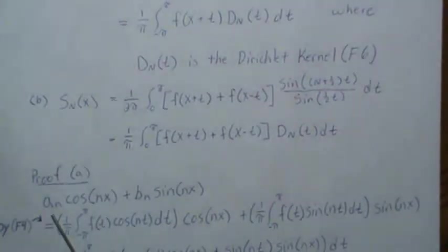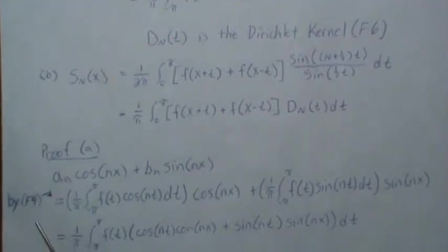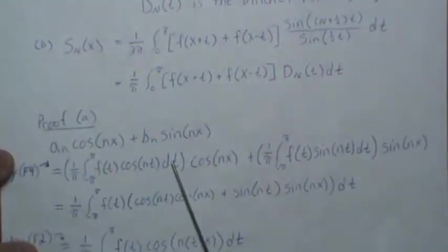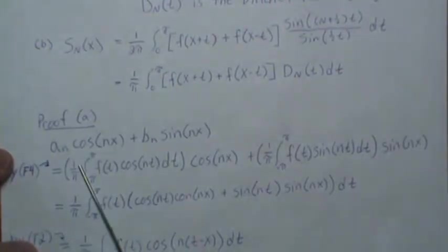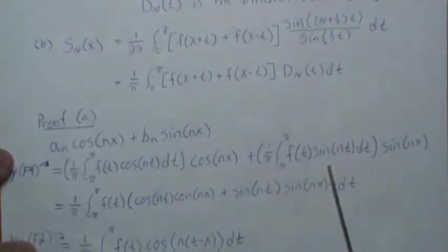If we put in the Fourier coefficients for A_n and B_n, that was in video F4. The A_n is this and the cosine comes down. The B_n is defined like this.